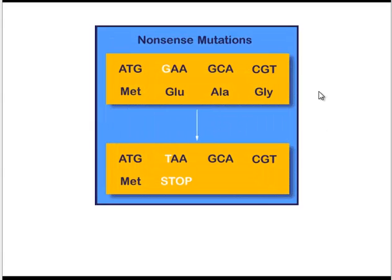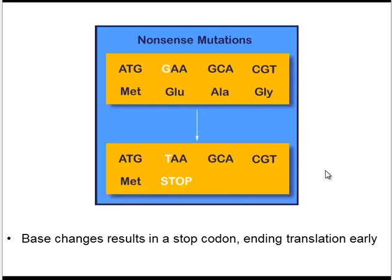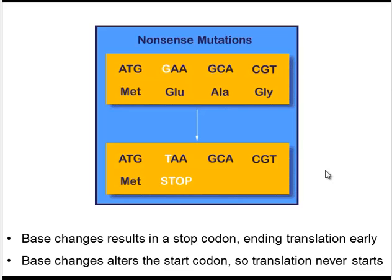The final point mutation is a nonsense mutation. In this case, a single base change results in a stop codon, which stops translation of the DNA sequence prematurely. This could also happen if a start codon is mutated, in which case translation wouldn't occur at all.